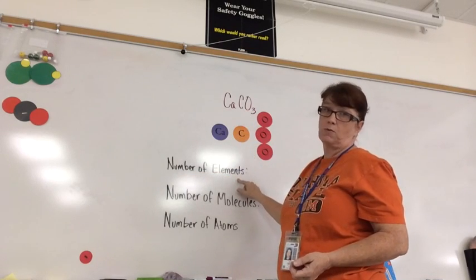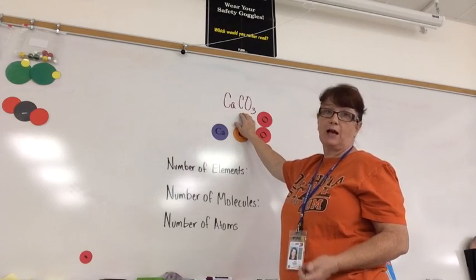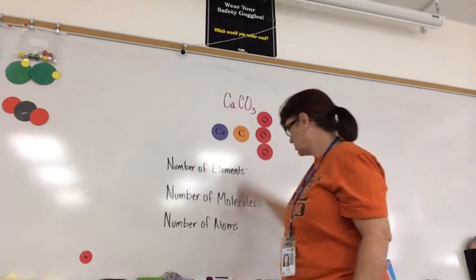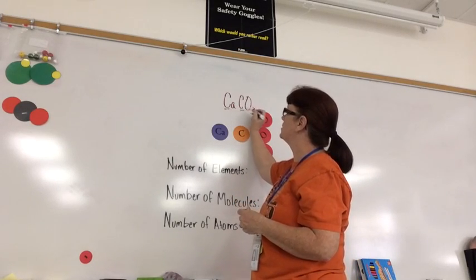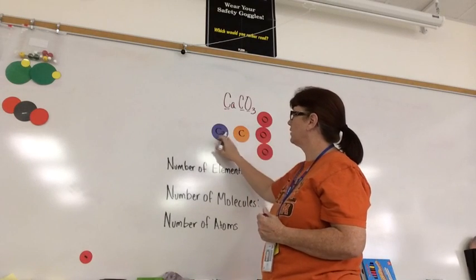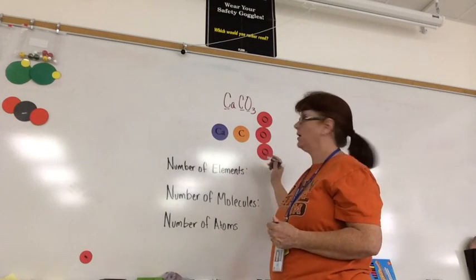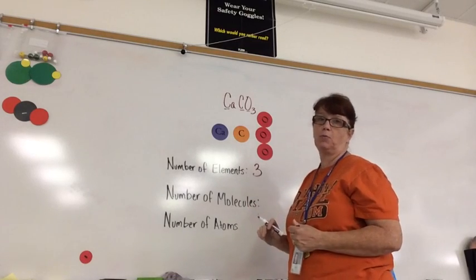Number of elements. The way that you count your elements in a chemical formula is to count the number of capital letters. So we have a capital C, a capital C, and a capital O. Or if I'm looking here, I can look at the number of colors, and I have 3. So I have 3 as my number of elements.